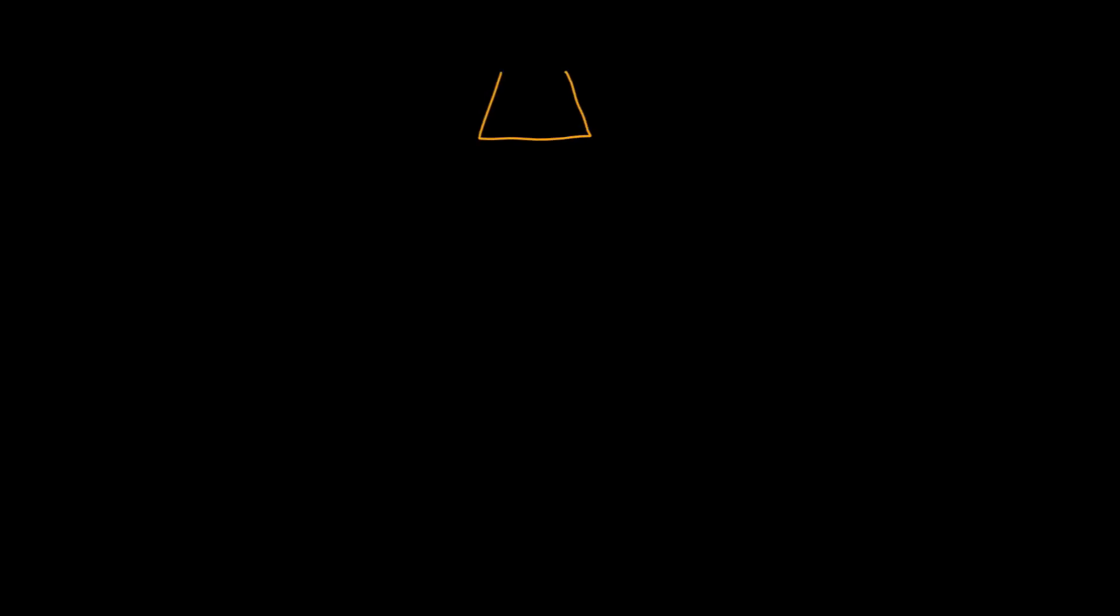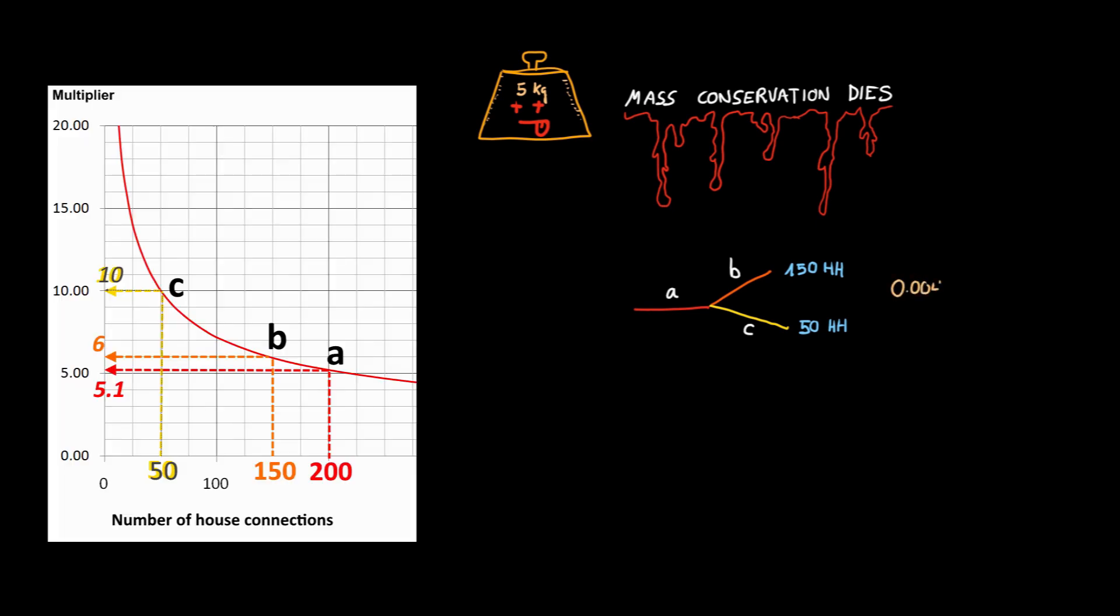But there's a practical problem with using simultaneity. The mass is no longer conserved, and physics and most modeling software require mass conservation. In other words, the water is neither created nor destroyed inside the pipes. Take this fork system. Different numbers of house connections lead to different simultaneity coefficients for each pipe. The flow of pipe A is no longer the addition of B and C.